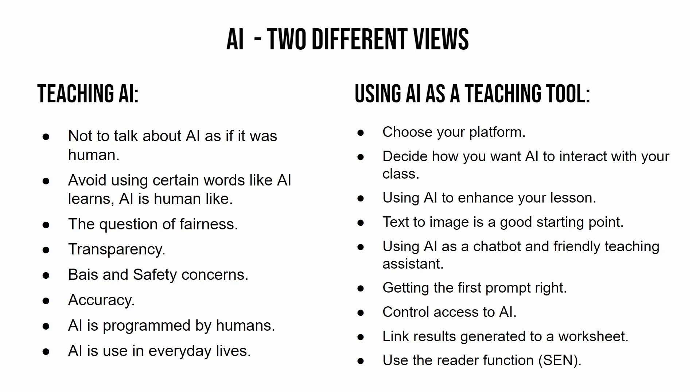You're going to be using AI to enhance your lesson. Text to image is a brilliant starting point — Canva is brilliantly suited to this. You can also use AI as a chatbot and friendly teaching assistant. If you're going to do that, you need to get the first prompt absolutely right because that will set the chatbot up in a particular mode. You also need to be able to control access to AI — you can switch it on or off for particular year groups.